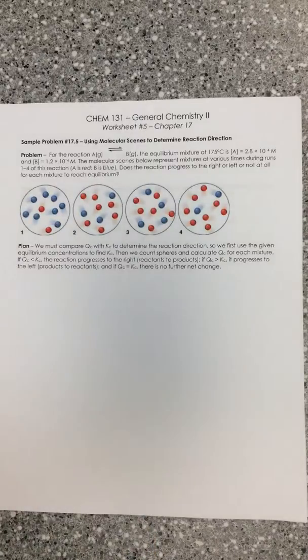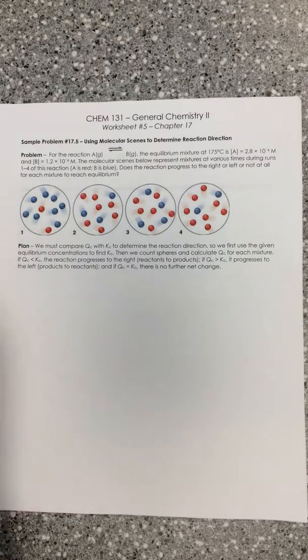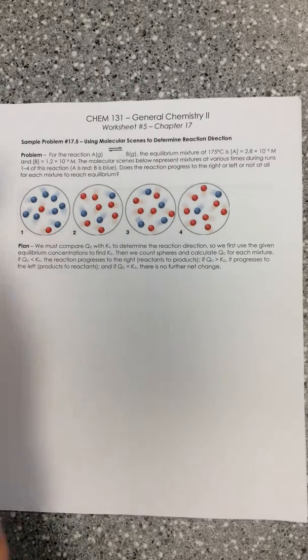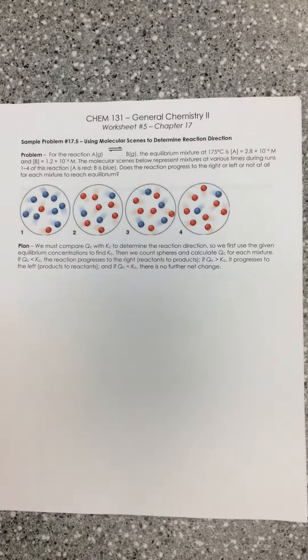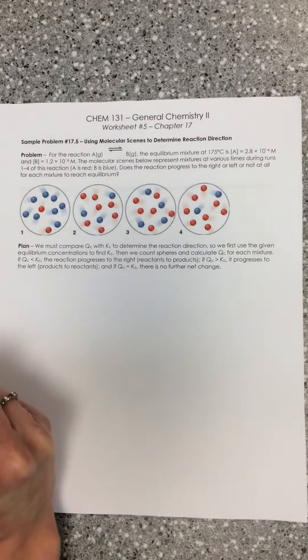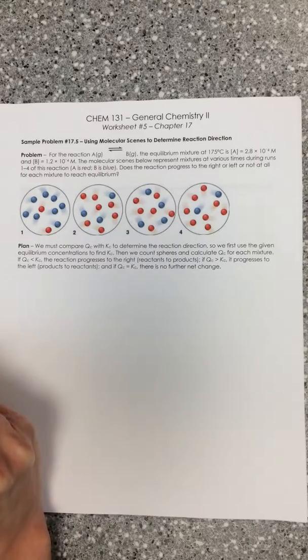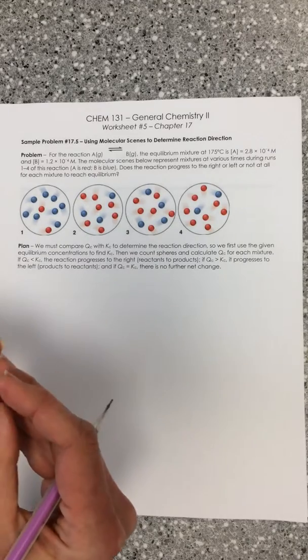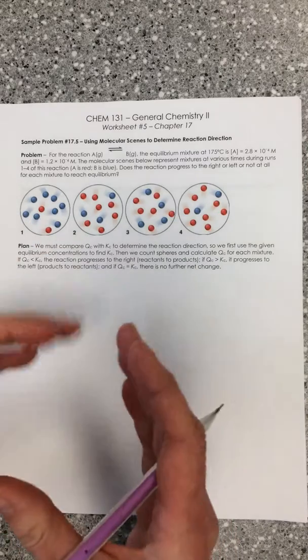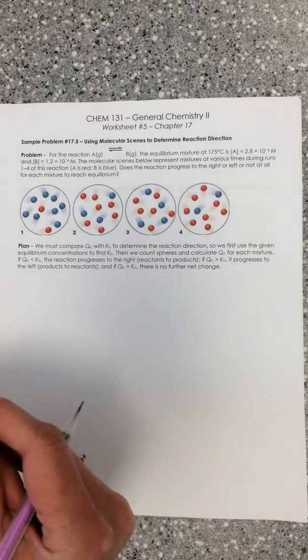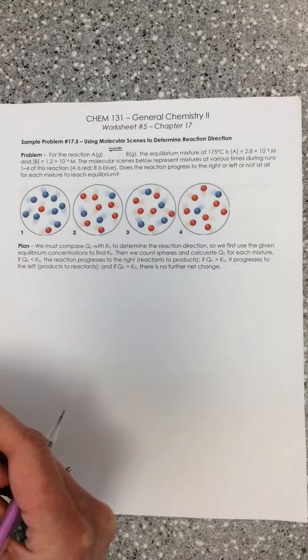Our next section here moves in our next couple of sample problems work on looking at comparing Q versus K to see which direction a reaction will shift. And remember, if you want to think about kind of a difference between Q and K, Q is kind of a snapshot of the concentrations where you are right now. K is a snapshot of the concentrations that you want to get to, your equilibrium values.